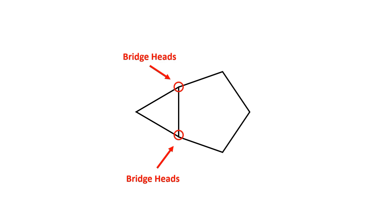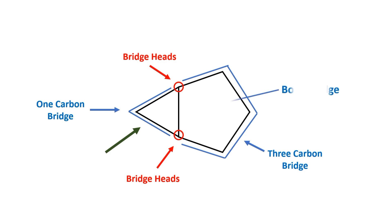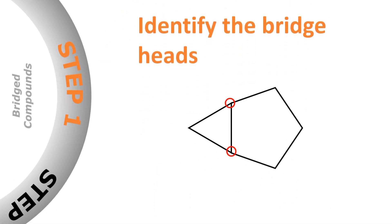The chains or paths which connect these bridge heads are called bridges. If you look at the molecule, the chain on the right side is a three-carbon chain, so it is a three-carbon bridge. Similarly, the chain on the left side is a one-carbon chain, so it is called a one-carbon bridge. Since the third connection between these two bridge heads is a bond, it is called a bond bridge.